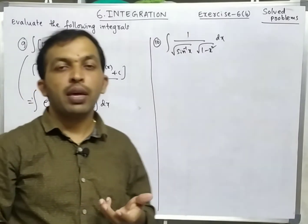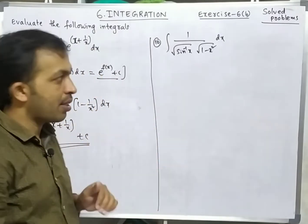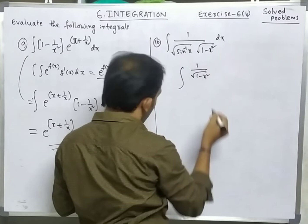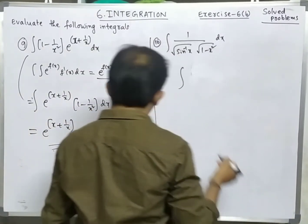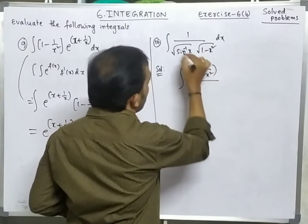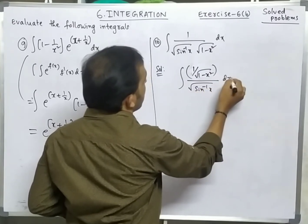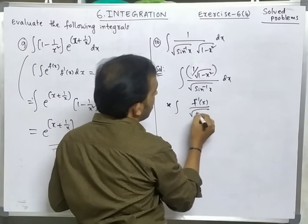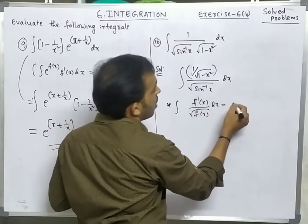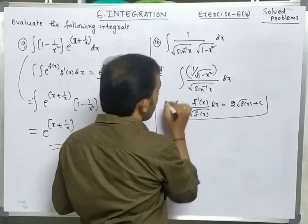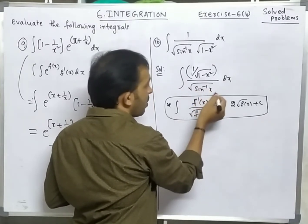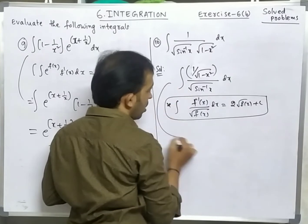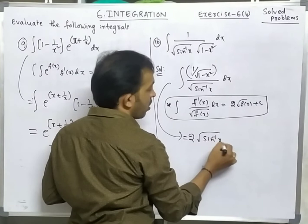These formulas we can apply in competitive examinations — learn these shortcut methods. Next: integration of (1/√(1-x²)) / sin⁻¹x dx. The formula is integration of f'(x)/√(f(x)) dx = 2√(f(x)) + c. Here f(x) = sin⁻¹x, and f'(x) = 1/√(1-x²), which is in the numerator. The answer is 2√(sin⁻¹x) + c.